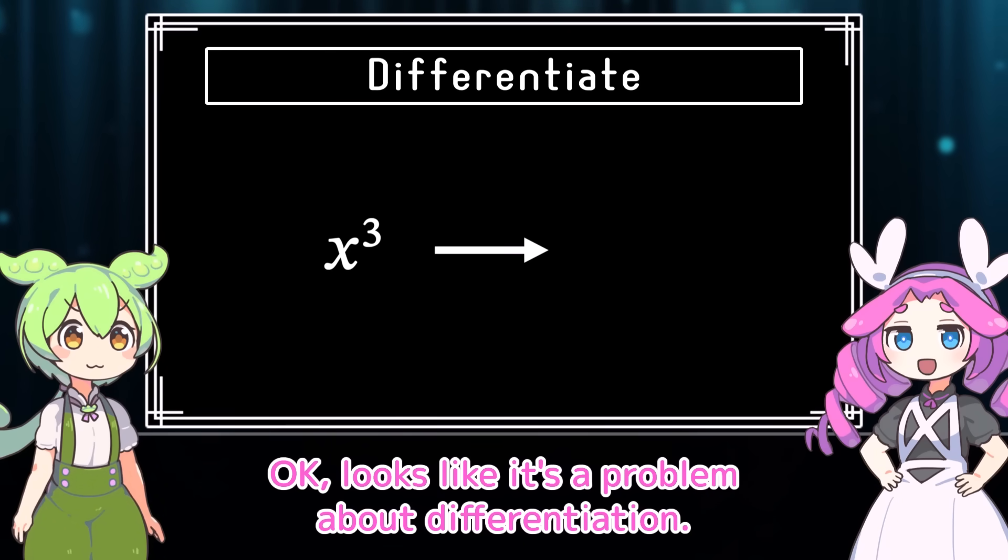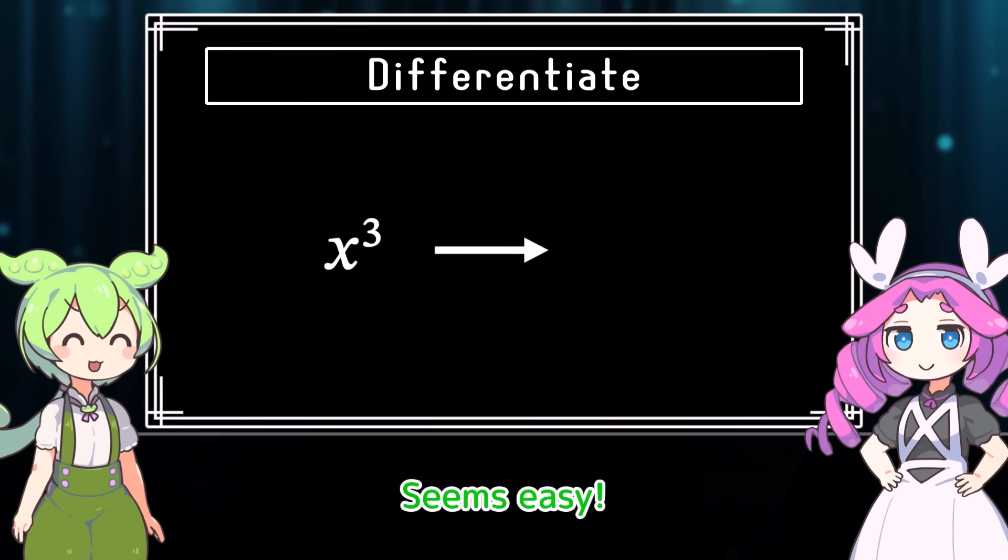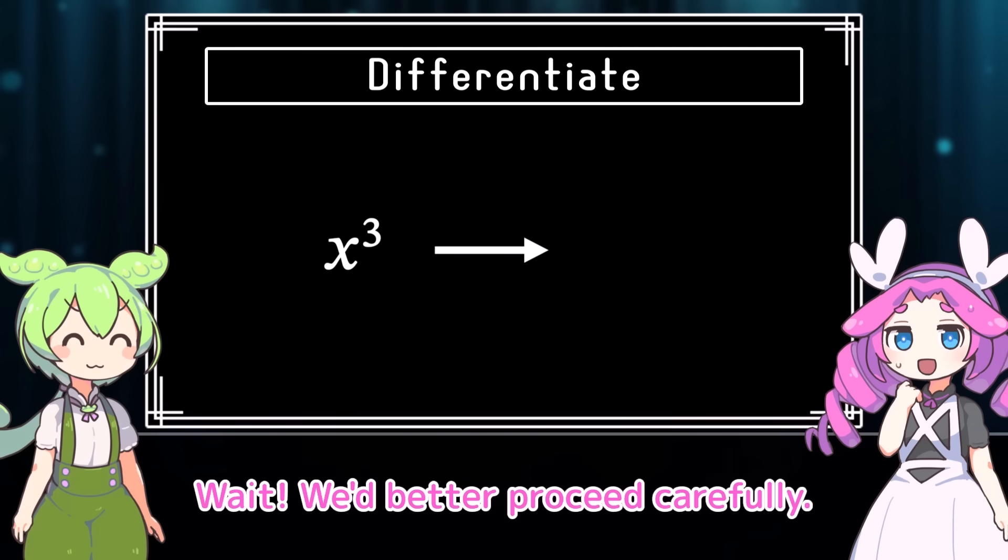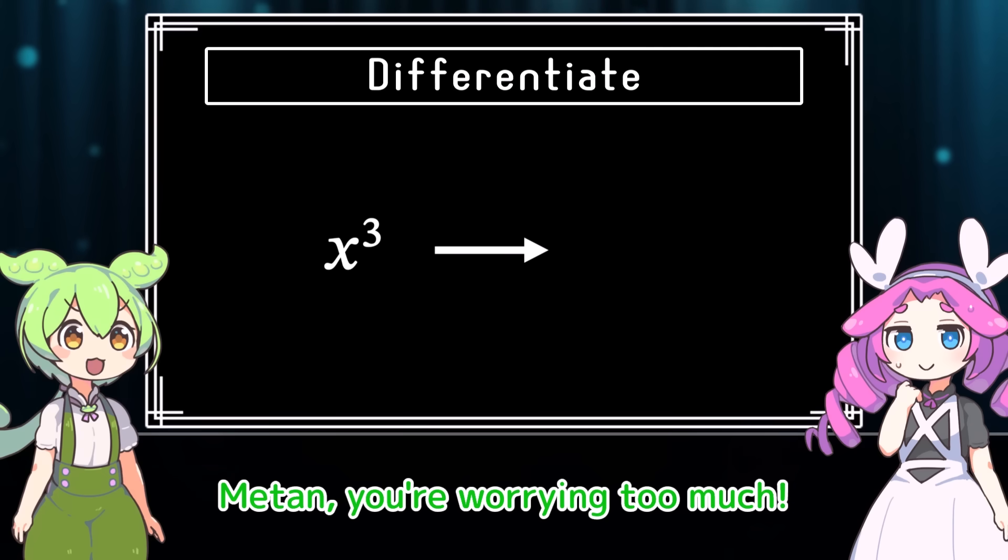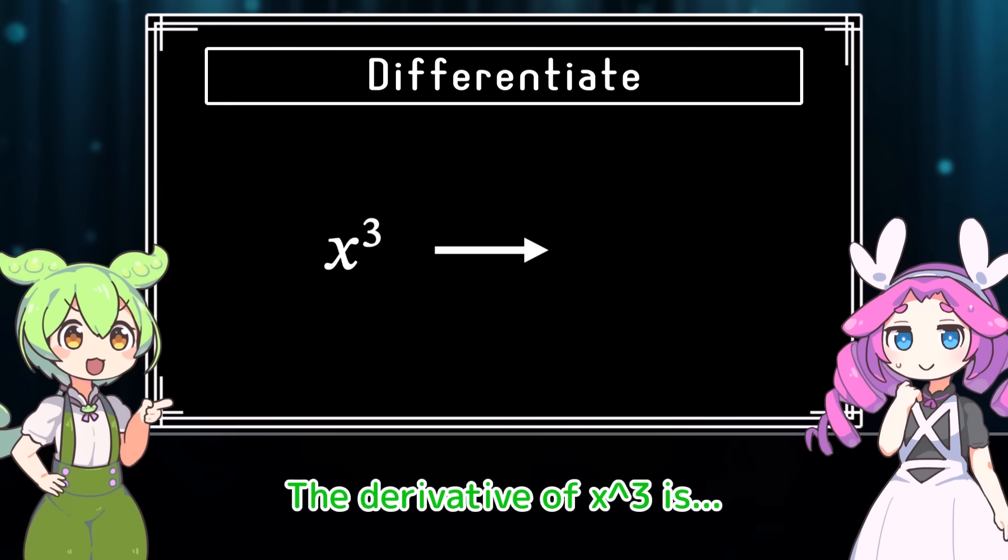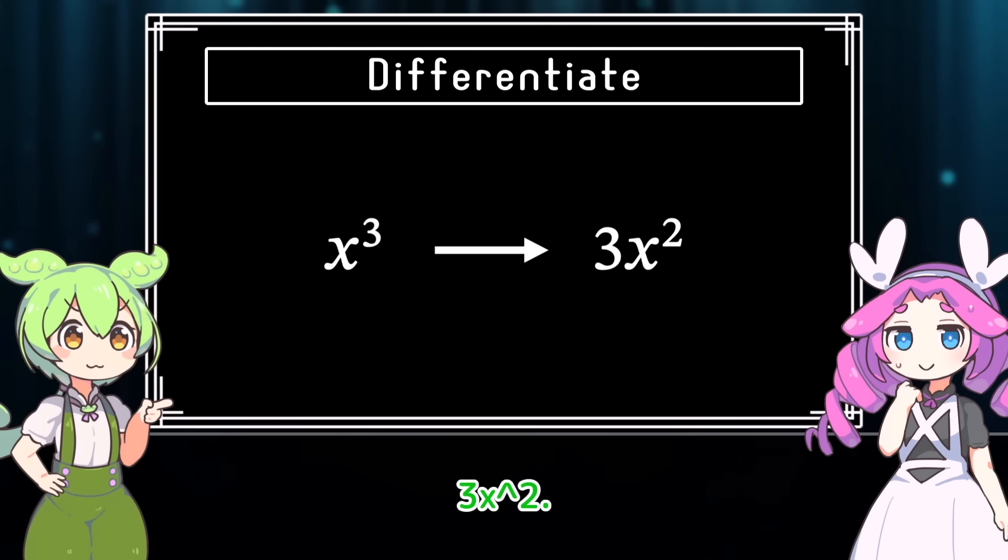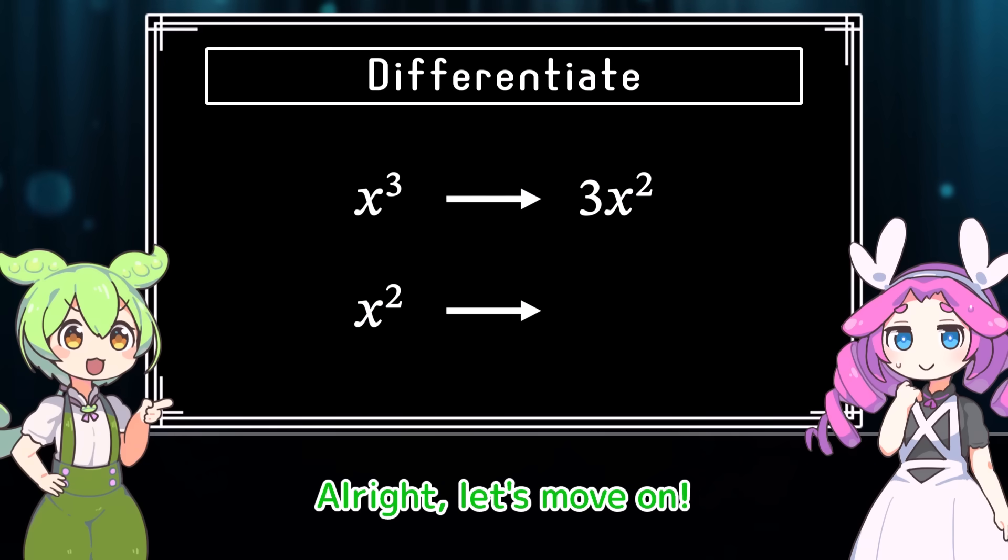Okay, looks like it's a problem about differentiation. Seems easy. Leave it to me. Wait, we'd better proceed carefully. Madden, you're worrying too much. The derivative of x cubed is 3x squared. Alright, let's move on.